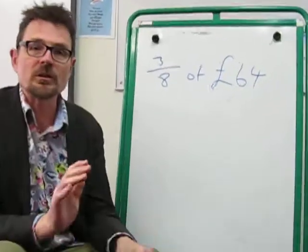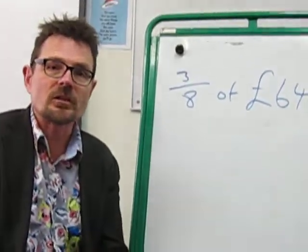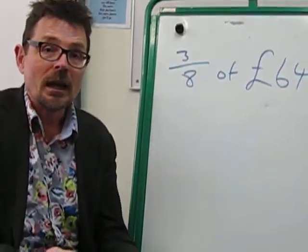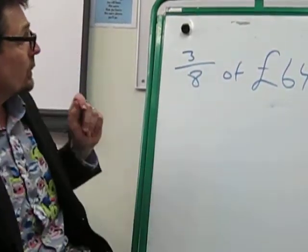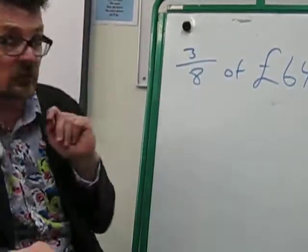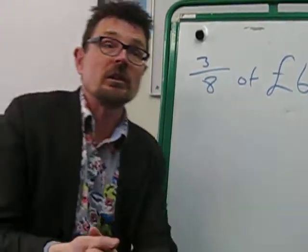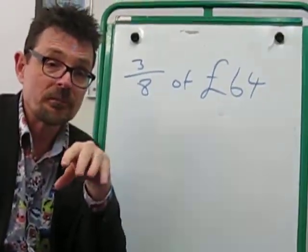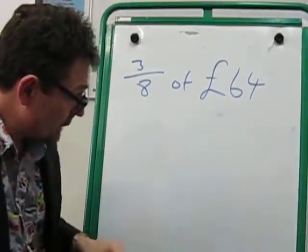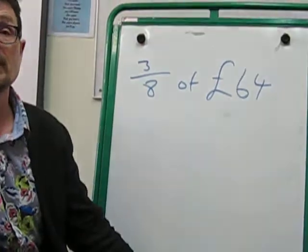Now let's pretend you've got a lovely aunt or uncle and they have said, "You can have 3 eighths of 64 pounds, if you can work out how much that is." Okay, let's have a look at how we do that.